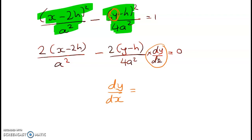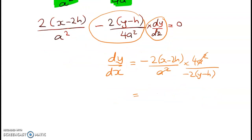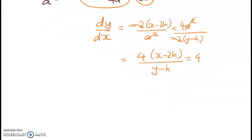So dy by dx is going to equal negative 2 times x minus 2h over a squared divided by this, so times 4a squared over negative 2 y minus h. Lots of stuff is going to simplify away, so the a squareds go, negative 2 and negative 2 happily disappear and we've got 4 times x minus 2h over y minus h and that has to equal 4. That gives me the condition that x minus 2h, so solving this, x minus 2h is equal to y minus h. x minus y is equal to h, and at point p the coordinates are p and q, we have p minus q equals h as required.